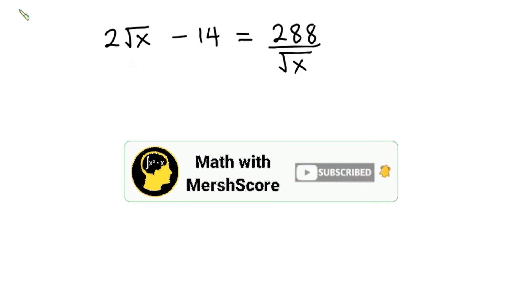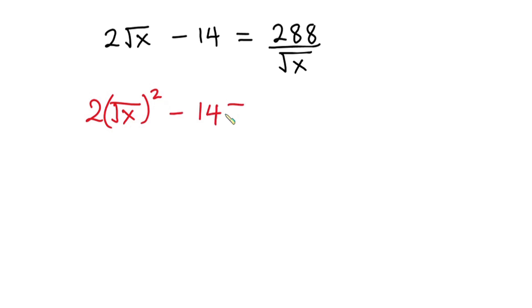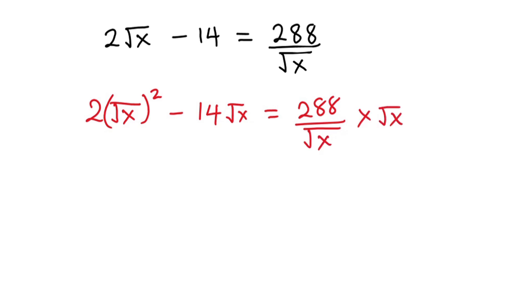Now let's get started. The first thing I'm going to do is multiply through by square root of x. So we have 2 times square root of x squared minus 14 square root of x, equal to 288 over square root of x times square root of x. Straight away, the square root will cancel.